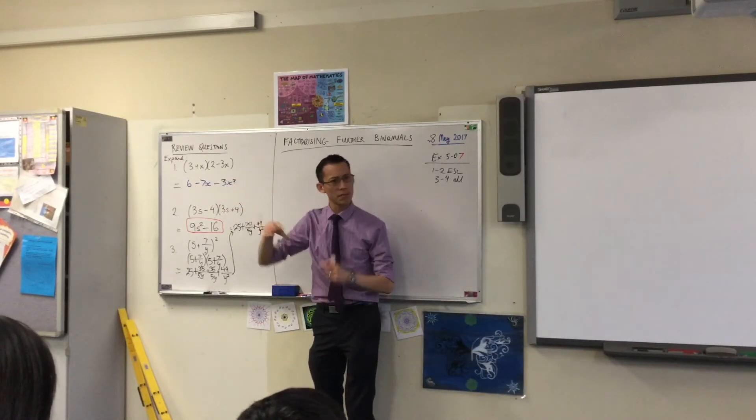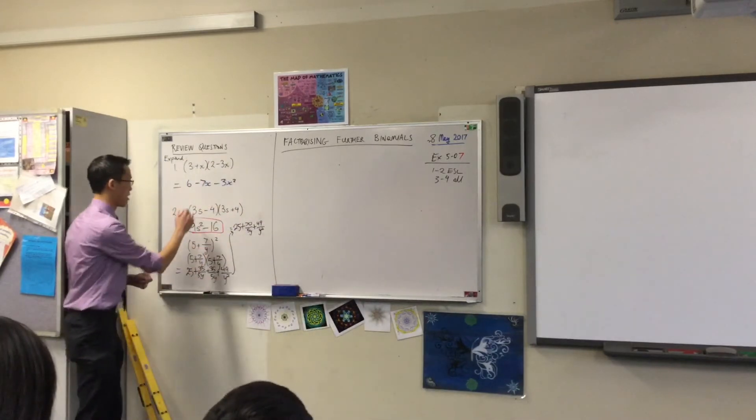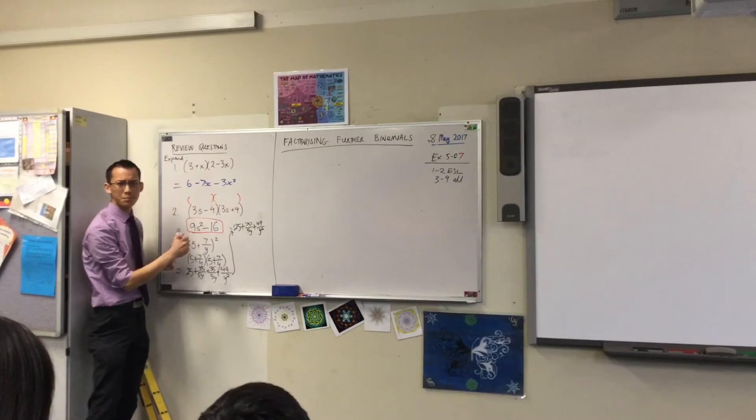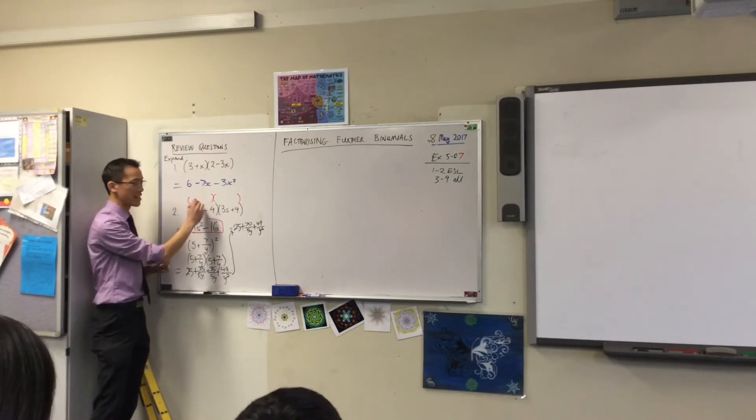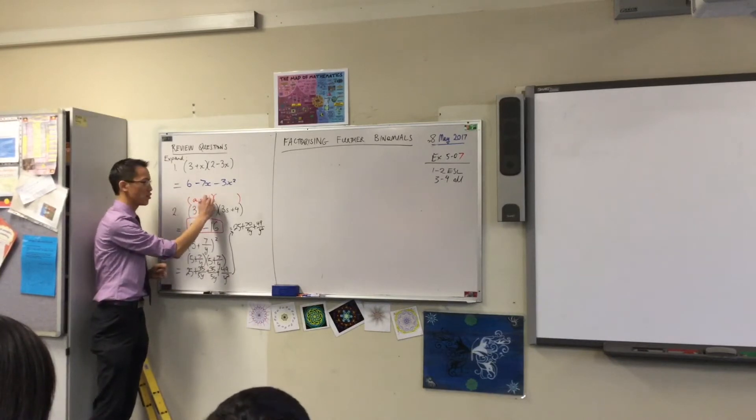Now what do you expect when something is factorized to the difference of squares? What's the actual result that you have learned? What and what go in here? I'll give you a clue. It starts with an A. A minus B, usually, and then?